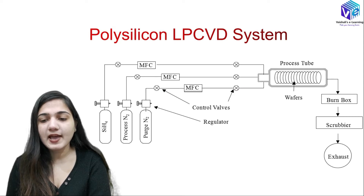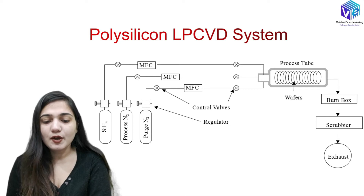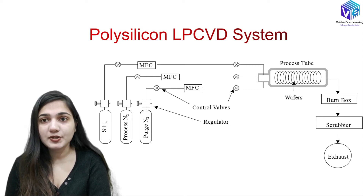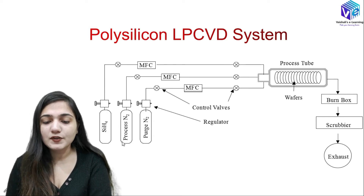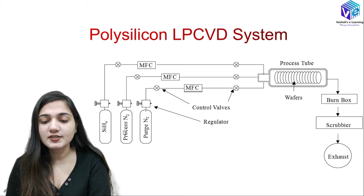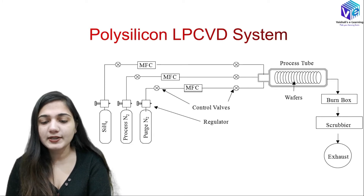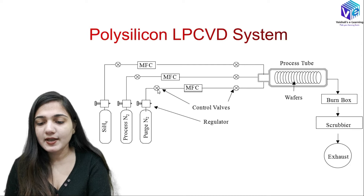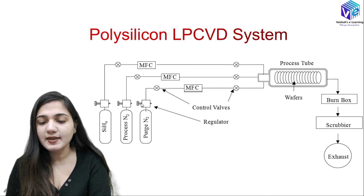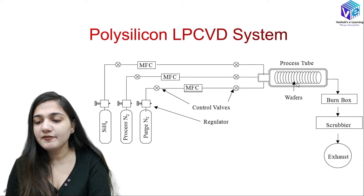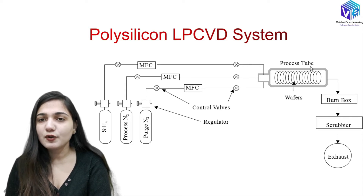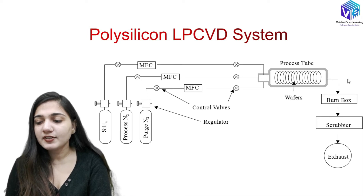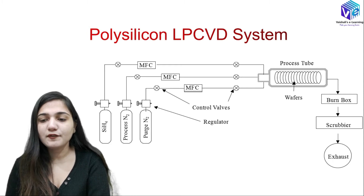Here we can see the LP-CVD polycrystalline system. For polycrystalline deposition, the temperature is around 750°C. Silane gas is used along with process nitrogen and purge nitrogen. The process nitrogen is very pure, while the purge nitrogen can have a purity level lesser than the process nitrogen. We have control valves and regulators, with multiple wafers present in the process tubes — this is a batch process. After that, we have a burn box, scrubber, and exhaust.